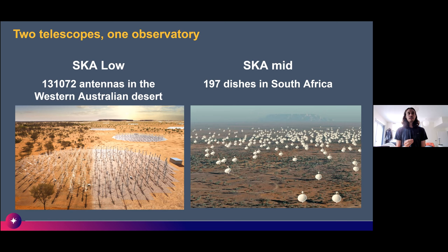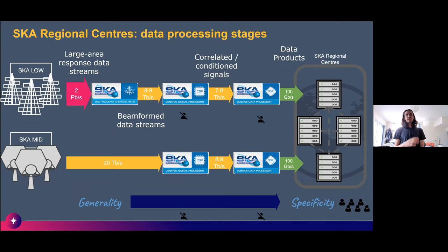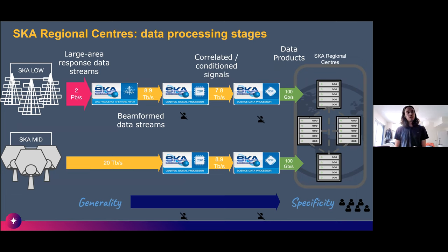The challenge is having two telescopes under one observatory and managing that data infrastructure so that users get the best experience. This is where SKA Regional Centers come in — they're going to be the centerpiece for how users see the observatory, interact with the data, and get science out of the SKA.